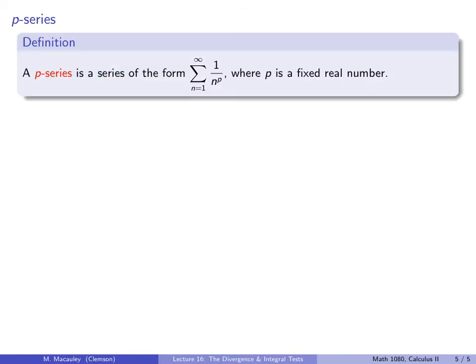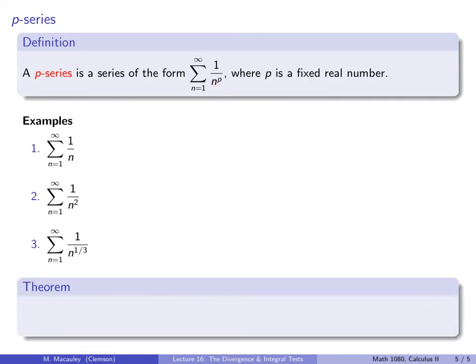The last topic of this lecture is p-series. A p-series has the form: sum of 1/n^p, where p is a fixed number and n is what changes. Compare this to a geometric series, which has the form sum of r^n, where r is fixed and n changes — here the exponent is fixed and n is in the base, whereas in geometric series n is in the exponent.